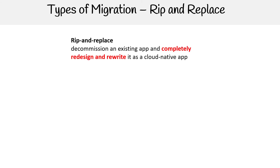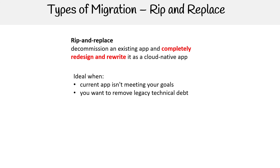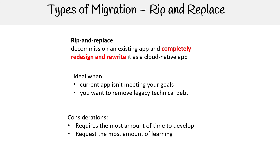The last one is rip and replace: decommission an existing app and completely redesign and rewrite it as a cloud-native app. This is ideal when the current app isn't meeting your goals and you want to remove legacy technical debt. The key consideration is that it requires the most amount of time both to develop and to learn.